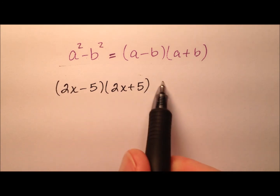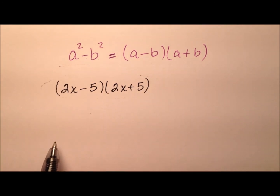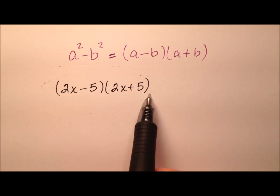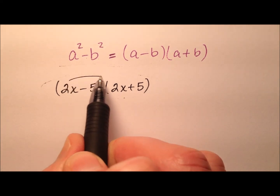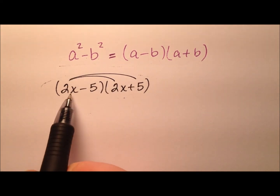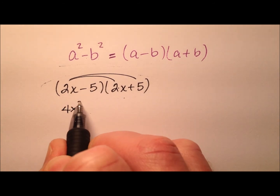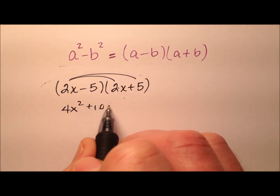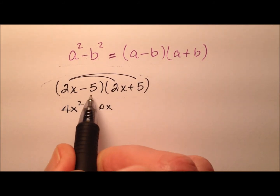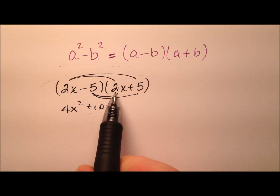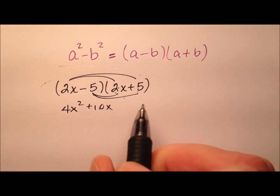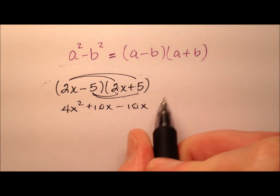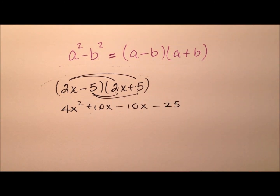Let's look at this first example and see why this works by working backwards — we're going to multiply this out first. Take 2x and distribute: 2x times 2x is 4x squared, and 2x times positive 5 is plus 10x. Now for negative 5: negative 5 times 2x is negative 10x, and negative 5 times positive 5 is negative 25.